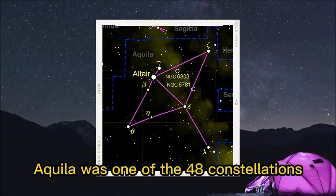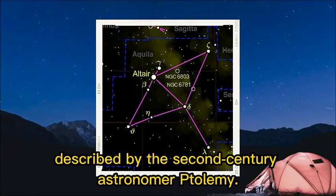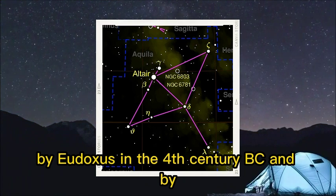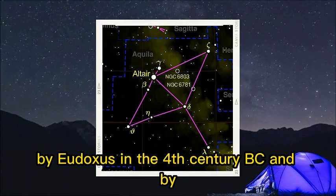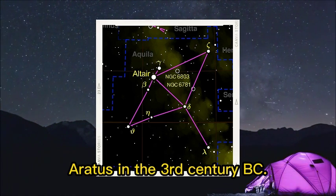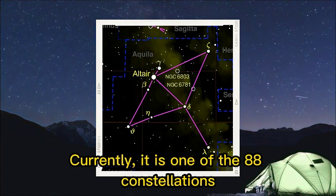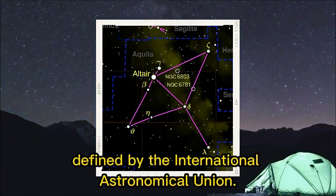Aquila was one of the 48 constellations described by the 2nd century astronomer Ptolemy. It had been mentioned earlier by Eudoxus in the 4th century BC and by Aretus in the 3rd century BC. Currently, it is one of the 88 constellations defined by the International Astronomical Union.